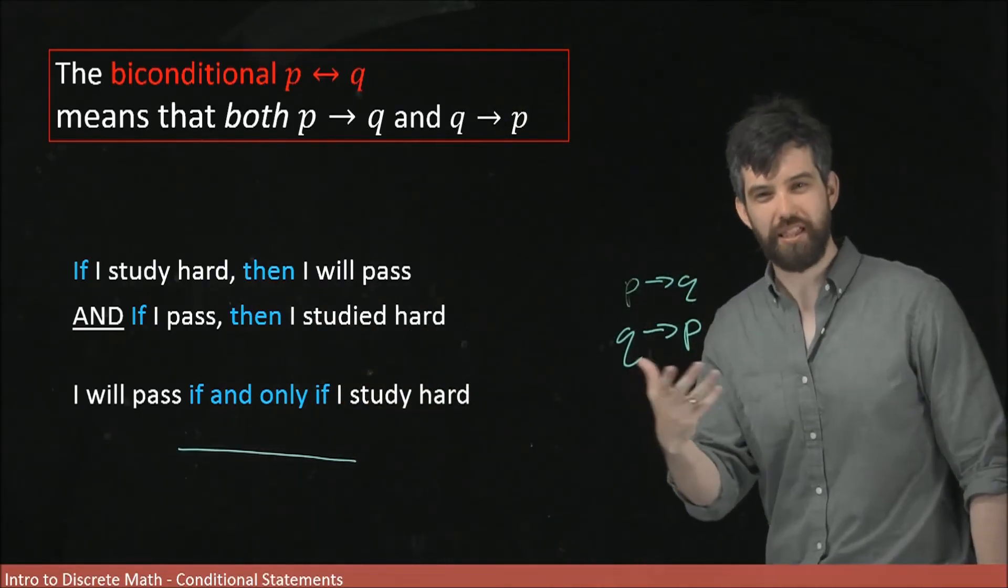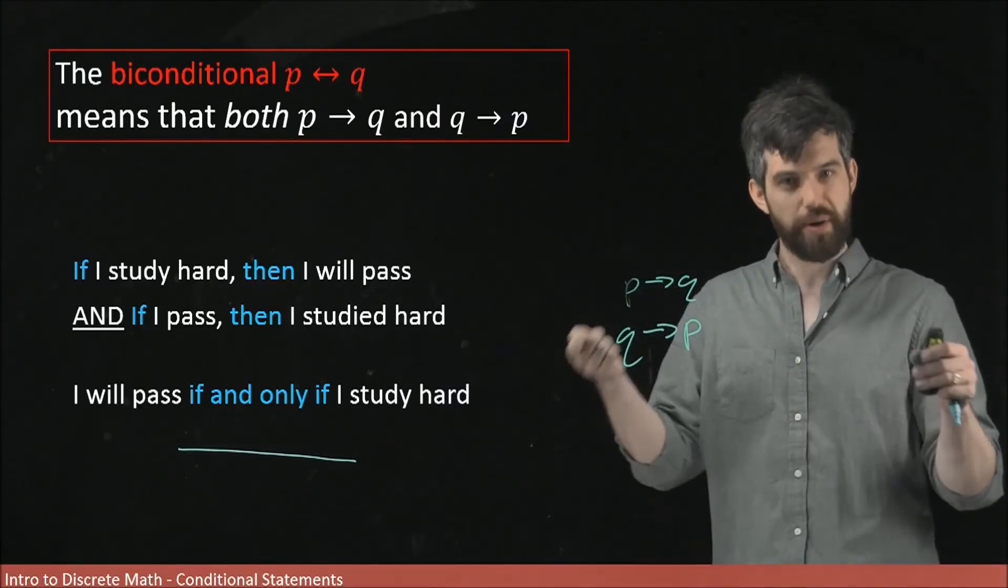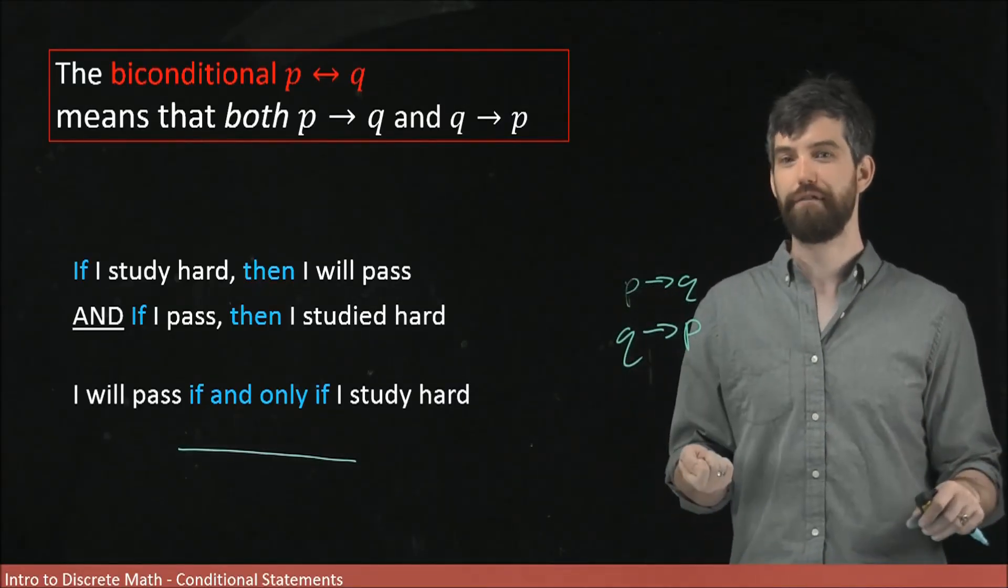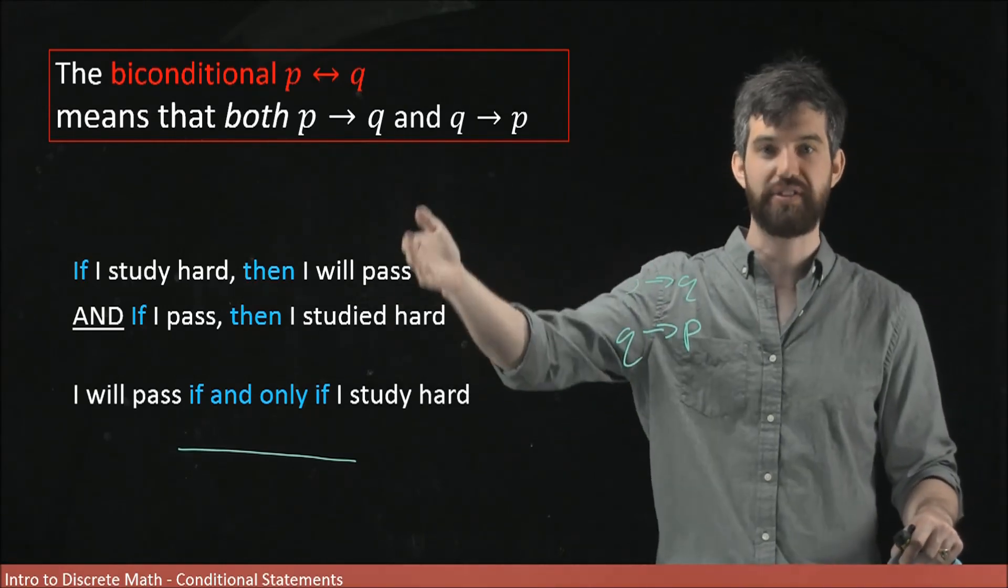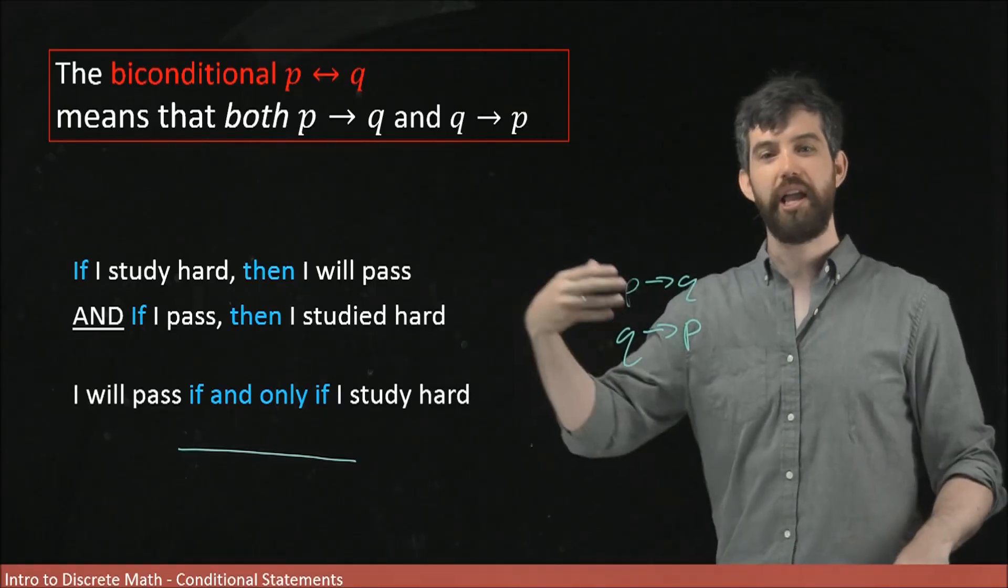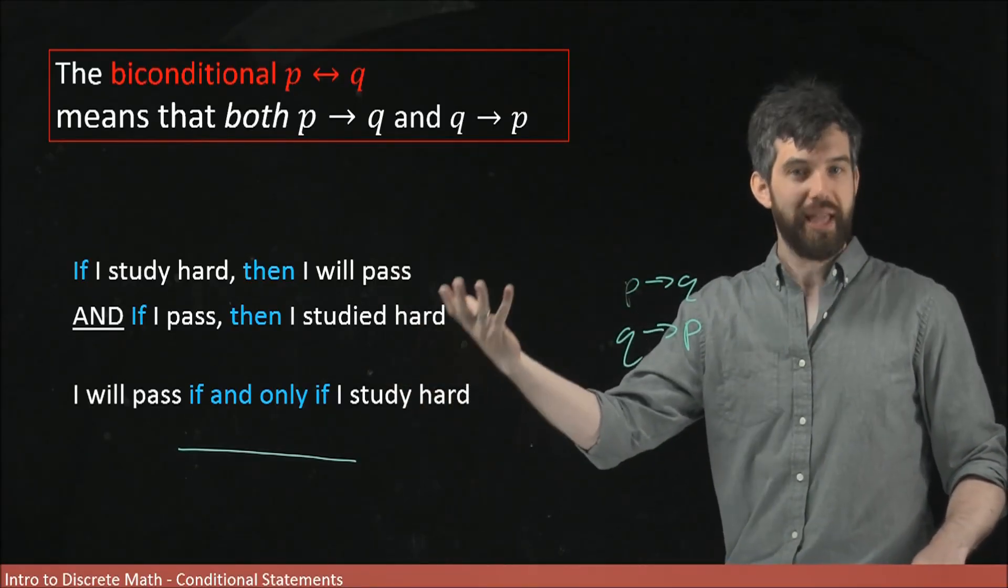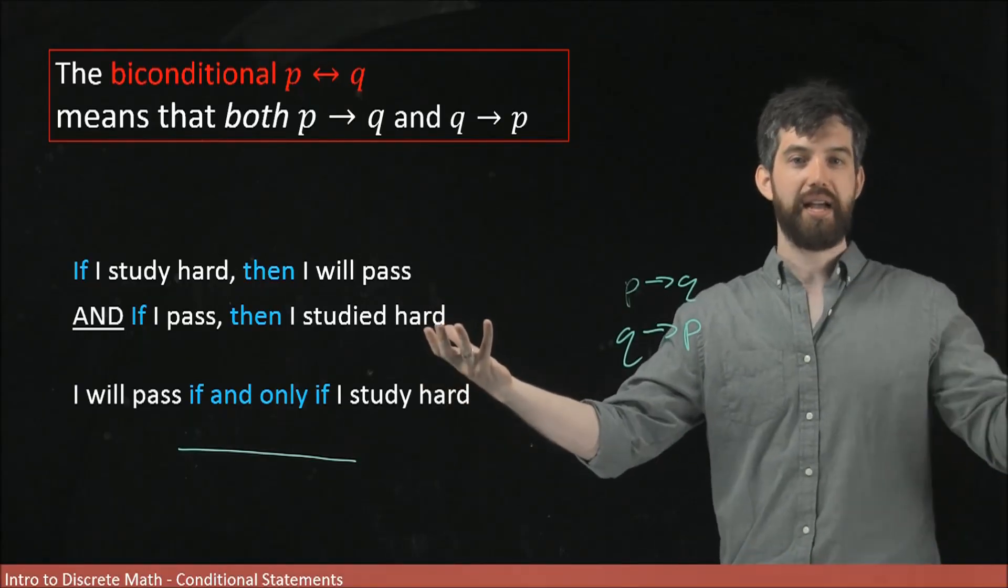So mathematicians really like this phrase, this if and only if, as sort of a shorthand for talking about biconditionals, as a shorthand for having a conjunctive statement with two different conditionals written down. They just put, if one thing, this is the passing, the thing I want to have, that's going to be true if and only if I studied hard.